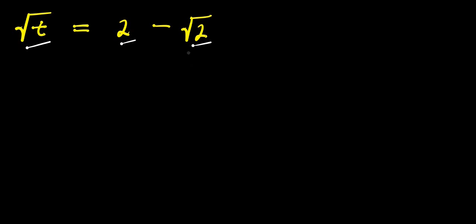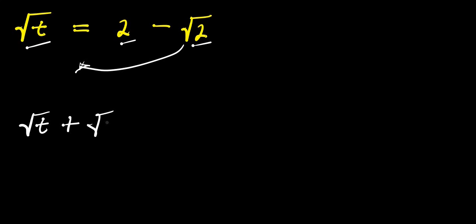The first step will be to move the root 2 over to the left side, so it becomes positive root 2. We now have root t plus root 2 equals 2.